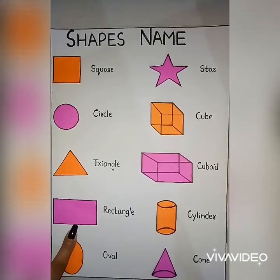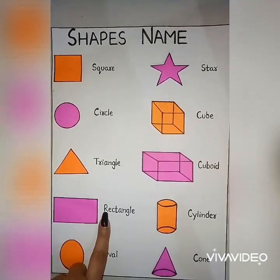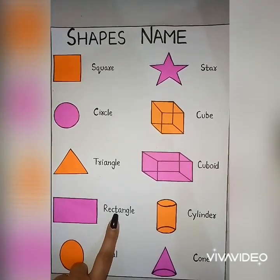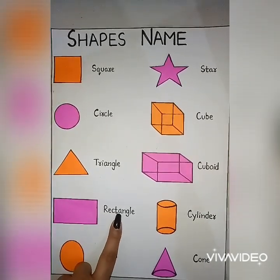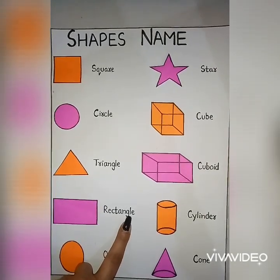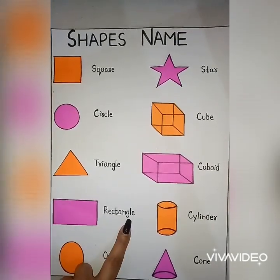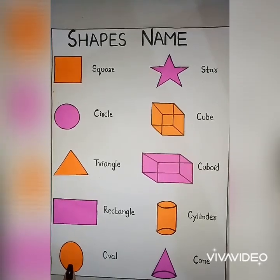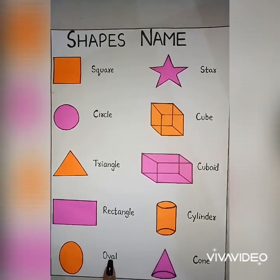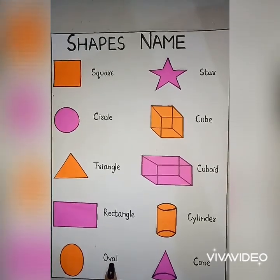This is a rectangle. R-E-C-T-A-N-G-L-E, rectangle. This is an oval. O-V-A-L, oval.